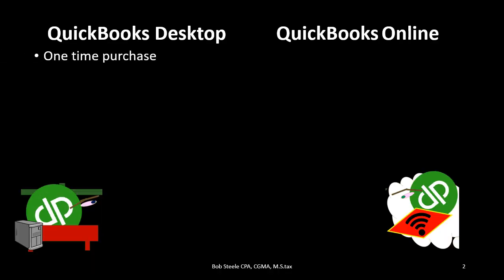The first difference is that QuickBooks Desktop is a one-time purchase, whereas QuickBooks Online is a subscription. The desktop version is something we download to the computer — you can think of it as software we have on our computer, similar to Microsoft Word or Excel. As opposed to the online version, which is on the cloud. Whenever we work in the online version, we are on Intuit's server, we always need an internet connection, and all of our data will be on the Intuit cloud rather than on our computer.